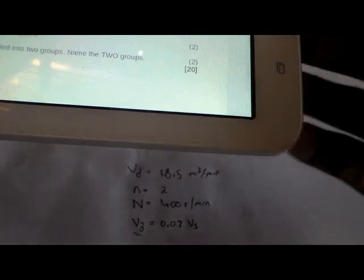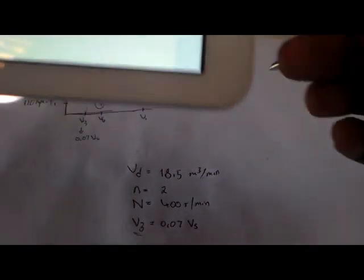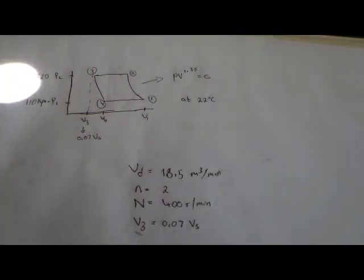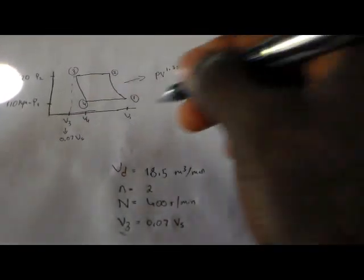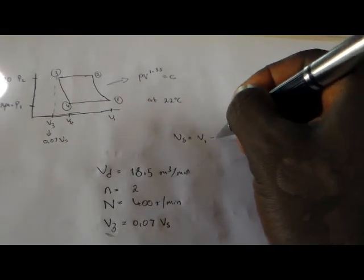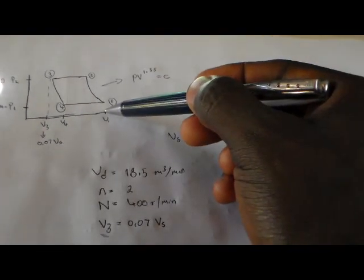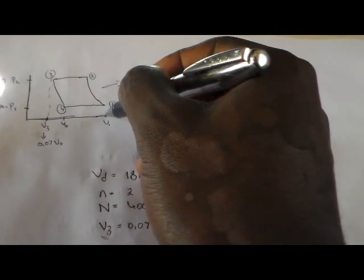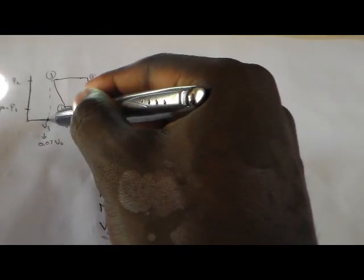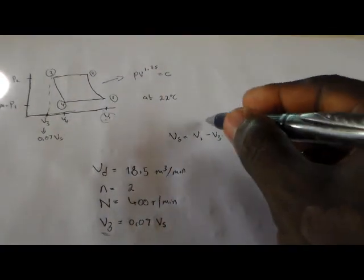The question asks us to calculate the stroke volume, which is the swept volume. To find the swept volume: Vs = V1 minus the clearance volume V3. However, we don't have V1 directly. We know V3 = 0.07·Vs, so we can express V1 = V3 + Vs.